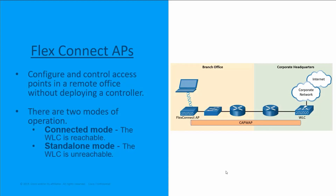There are two modes of operation for the FlexConnect AP, which is the access point in the branch office. The first is connected mode. In connected mode, the wireless LAN controller is reachable across the wide area network. With this, there is CAPWAP connectivity where traffic can be sent through the CAPWAP tunnel, and the wireless LAN controller performs all the CAPWAP functions like split MAC.